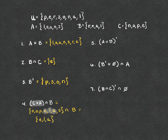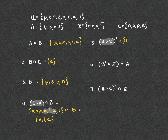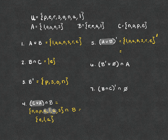For number five, we again have parentheses, so we find A union B first — which we already found in number one: {L, O, A, N, S, R, E}. Then we find the complement of that by going to the universal set and crossing out all those letters. The only letter remaining is P, so the complement of A union B is {P}.